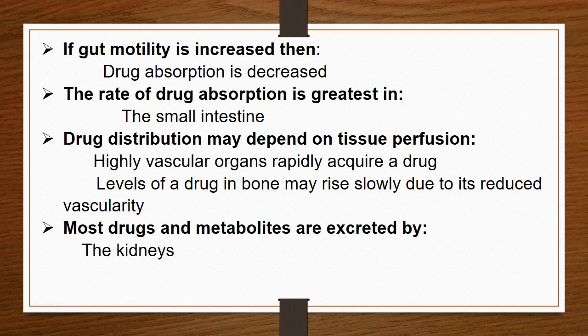If gut motility is increased, then drug absorption is decreased. The rate of drug absorption is greatest in the small intestine. For drug distribution and tissue perfusion, high vascular organs rapidly acquire a drug. Levels of drug in bone may rise slowly due to reduced vascularity, and most drugs and metabolites are excreted by the kidneys.